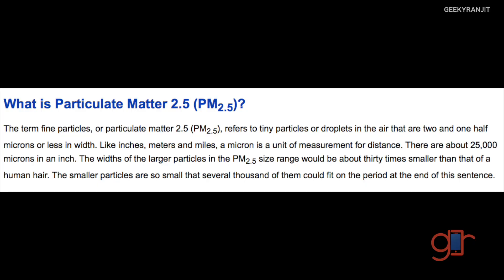We keep hearing about PM 2.5 — what is this all about? PM stands for particulate matter. Particulate matter is nothing but suspended particles in the air we breathe; they may be solids or liquid molecules and they are so small that you can't even see them. Particulate matter 2.5 means it's 2.5 microns or less in diameter — almost 30 times less than the diameter of a human hair. Bacteria is just 5 microns, for comparison.